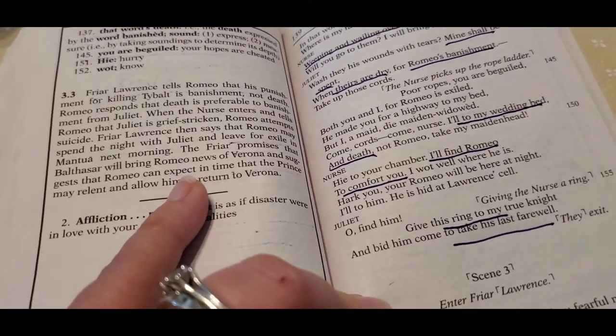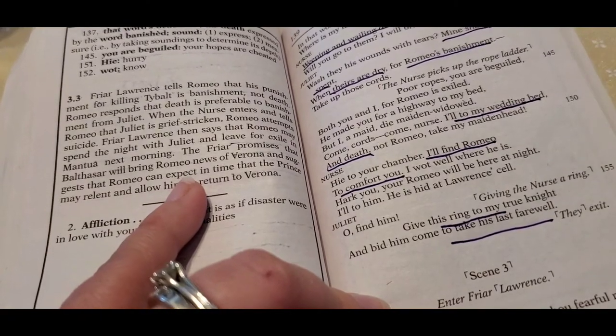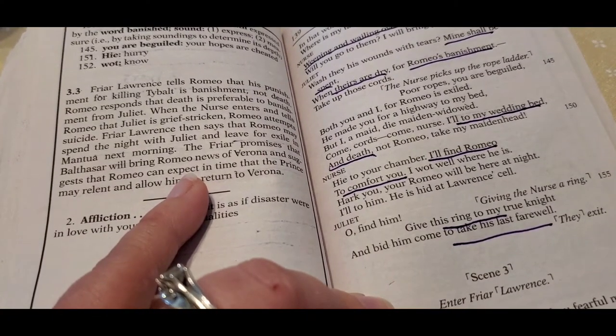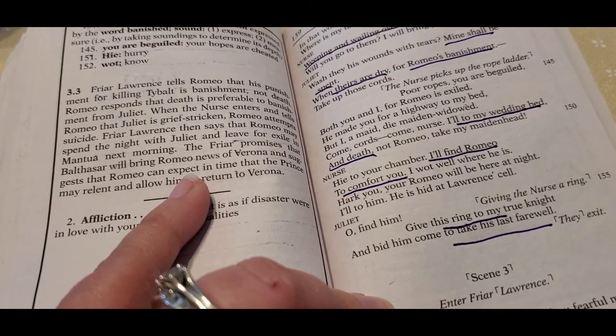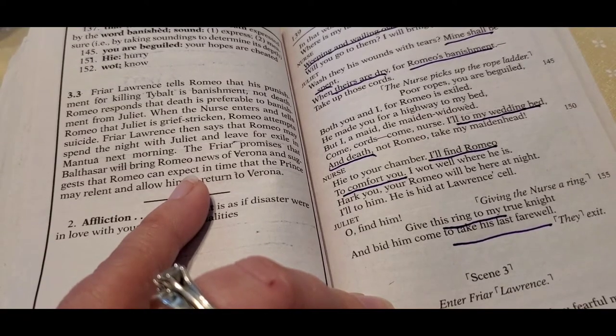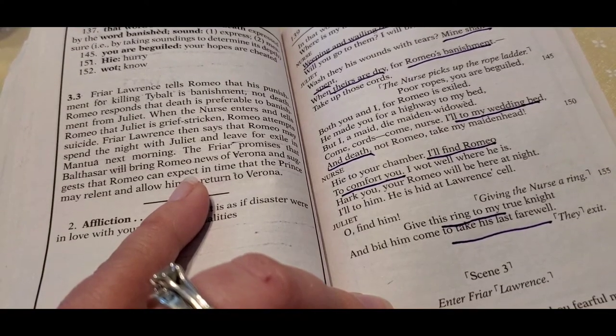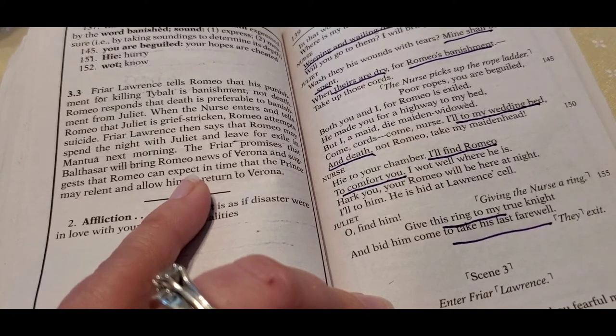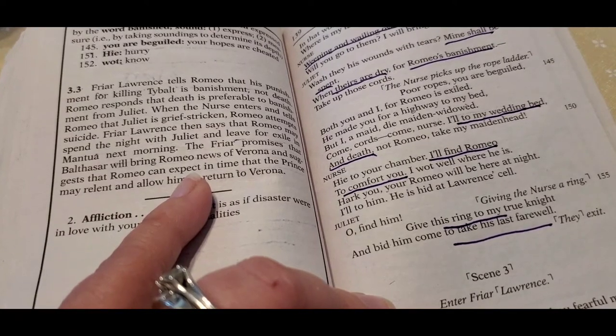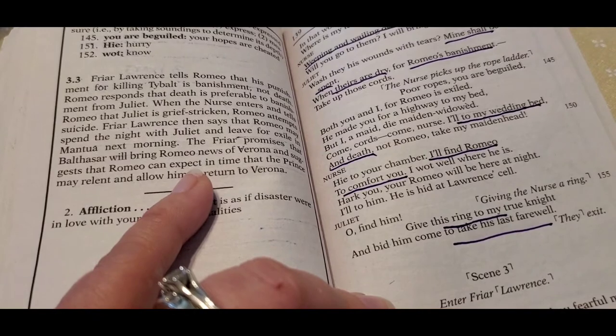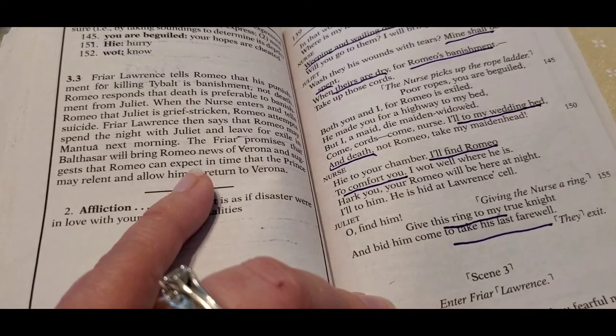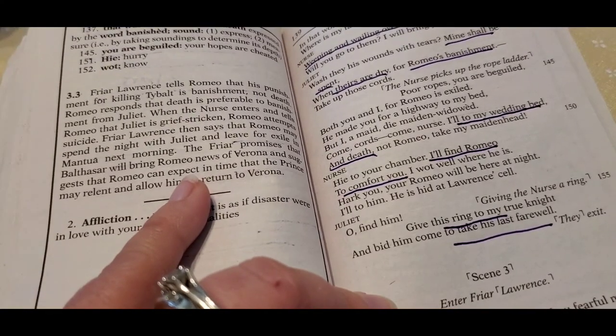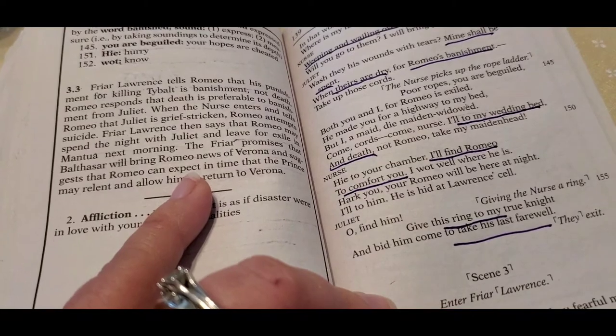So recap, Juliet's waiting for Romeo, excited about her wedding night, finds out Romeo's dead. Actually first thinks that Romeo's dead, then finds out he's not. It's Tybalt dead. She's upset. She kind of says Romeo is a terrible person. Then she takes it back. And then now she wants to be with Romeo again and wants to make sure she gets what she's owed as being a wife.